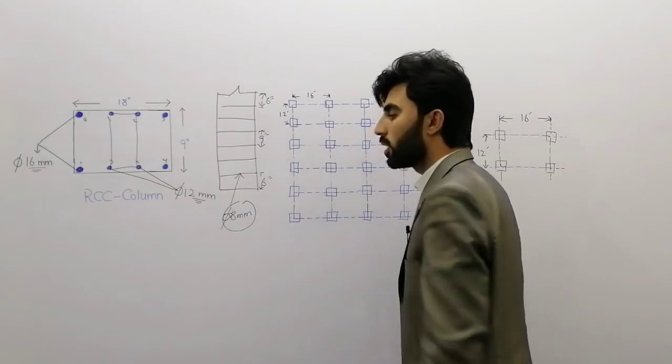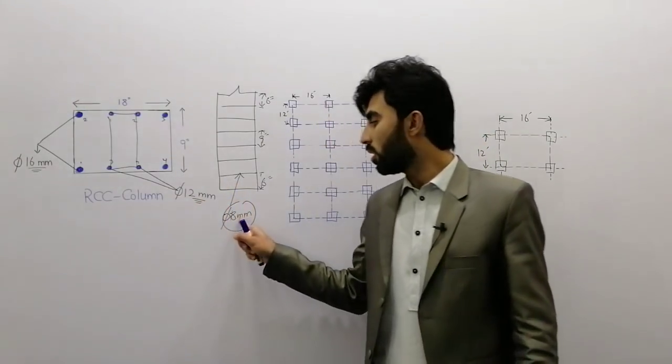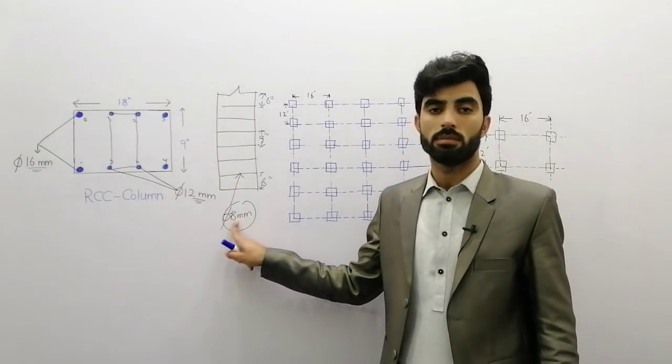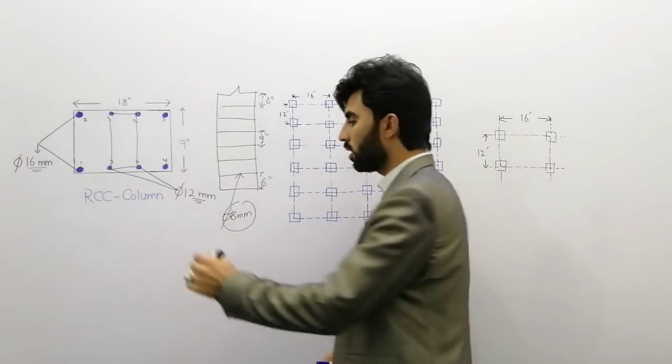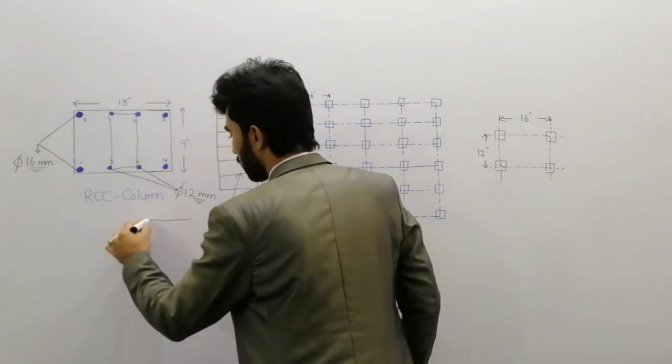Diameter of lateral ties is here 8 millimeter.